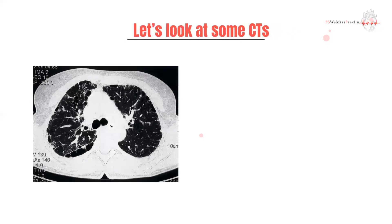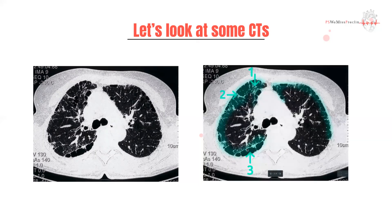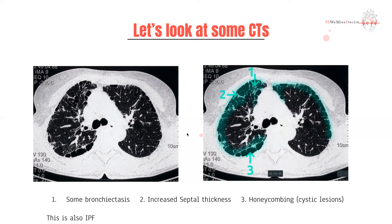Looking at some CTs — which are harder to interpret at a third-year level — you can notice large cystic spaces, also called honeycombing. The septum, which is ideally meant to be nice and thin, is thickened here — so you have increased septal thickness. You can also see how the walls of the bronchioles are thickened, which is bronchiectasis. This is also idiopathic pulmonary fibrosis.